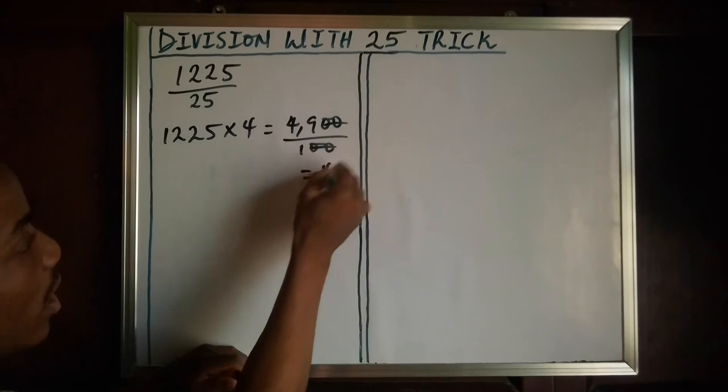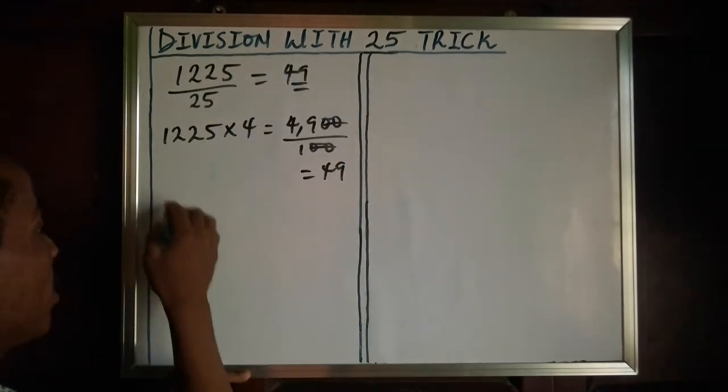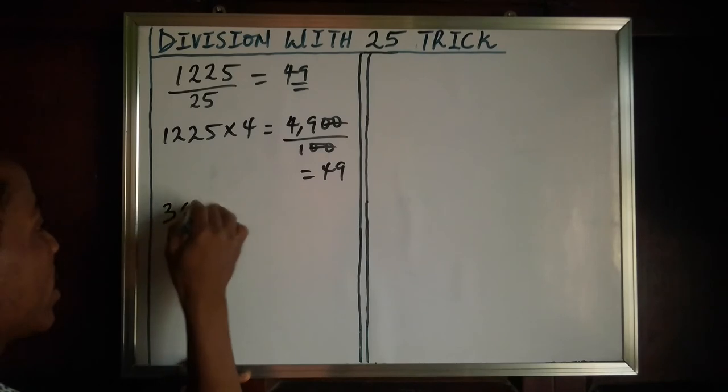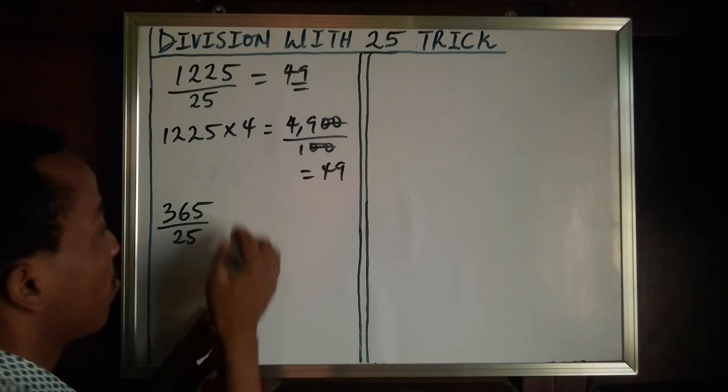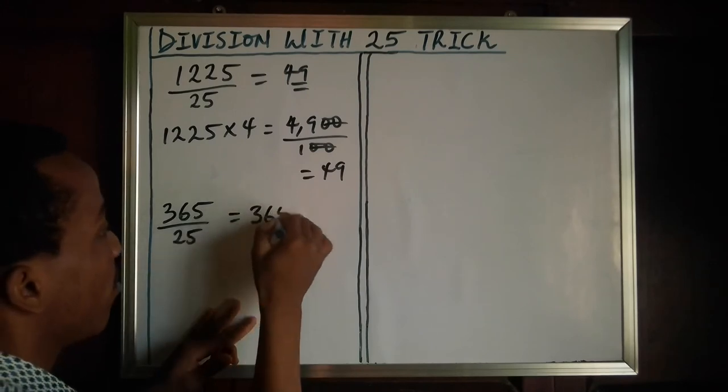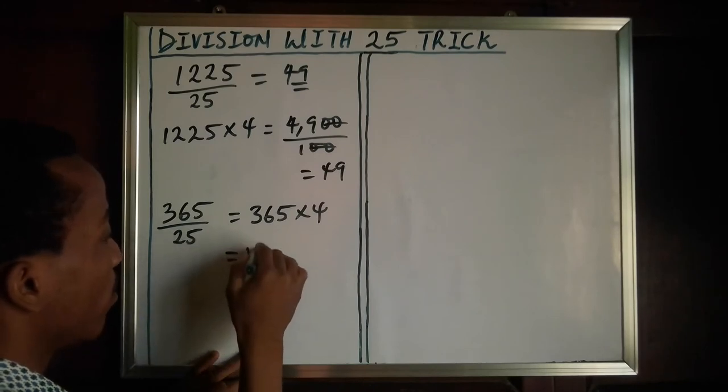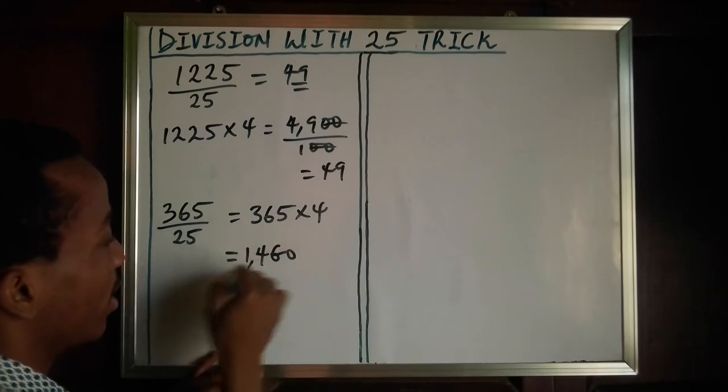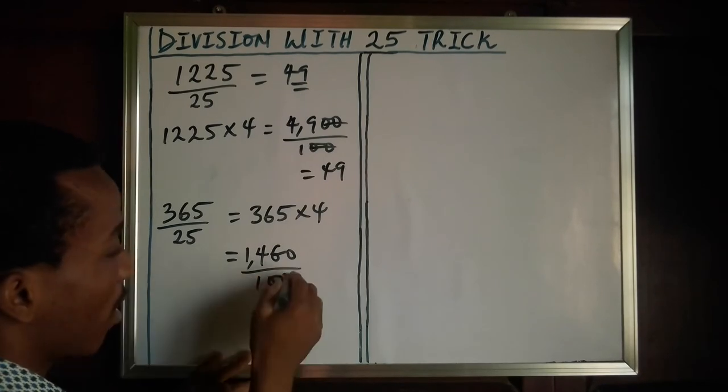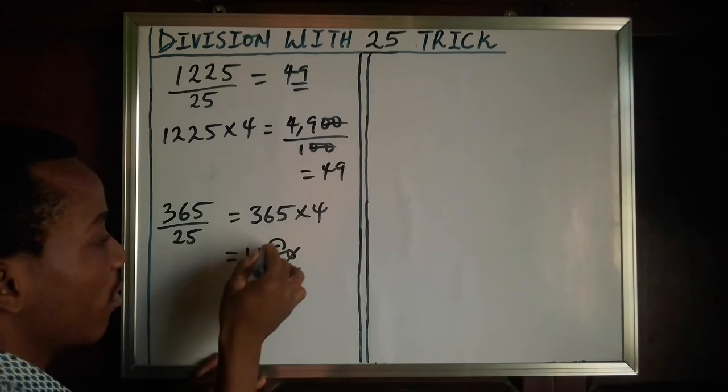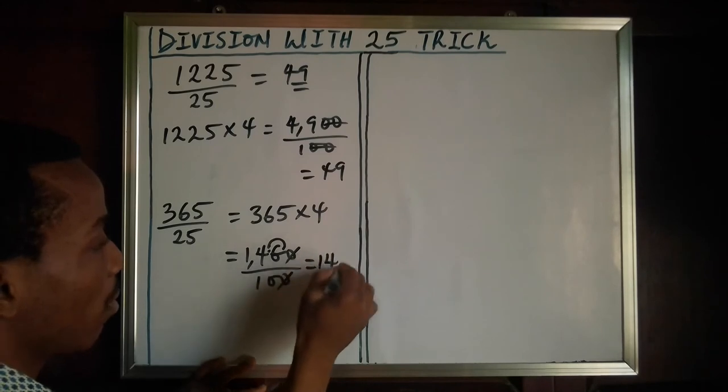If you're given 365 divided by 25, once again we multiply 365 by 4. So you have 365 multiplied by 4. This gives us 1460. Then you divide the value by 100. When you divide by 10, you move to the left once, so there's a decimal point here. We have 14.6. So 365 divided by 25 gives us 14.6. A very sharp and easy way you can do that.